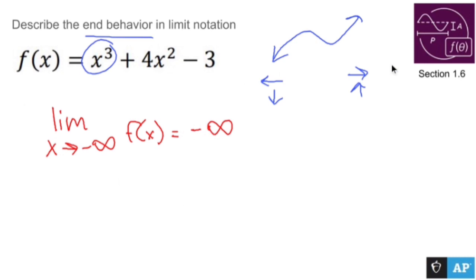As I move to the right, I'm going up. So the limit as x approaches positive infinity, which means x is getting larger, of f of x is going up towards positive infinity.